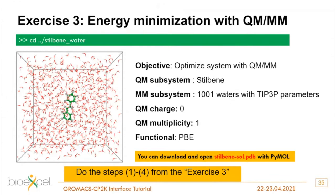In pure CP2K input files you need to set cell dimensions manually and ensure the QM cell is large enough to contain all your QM atoms. Regarding dispersion interactions: you need to consider three things. Dispersion between MM and MM atoms is handled by van der Waals parameters of the MM force field. Dispersion between QM and MM atoms is also inherited from the force field van der Waals interaction. For QM-QM dispersion, you need to use dispersion corrections.